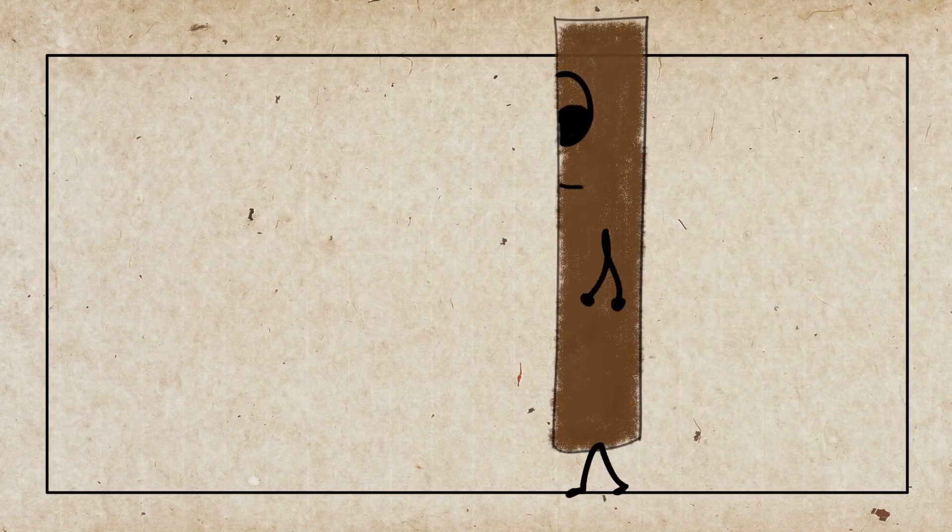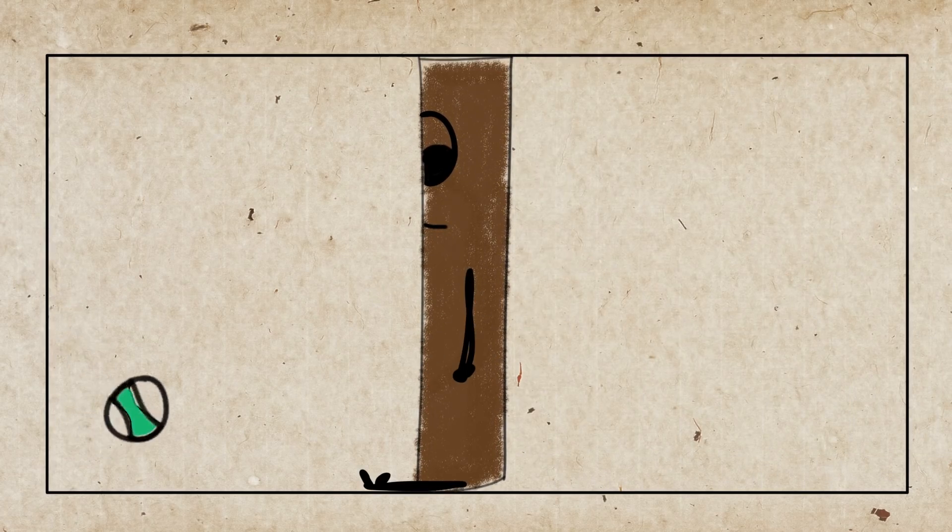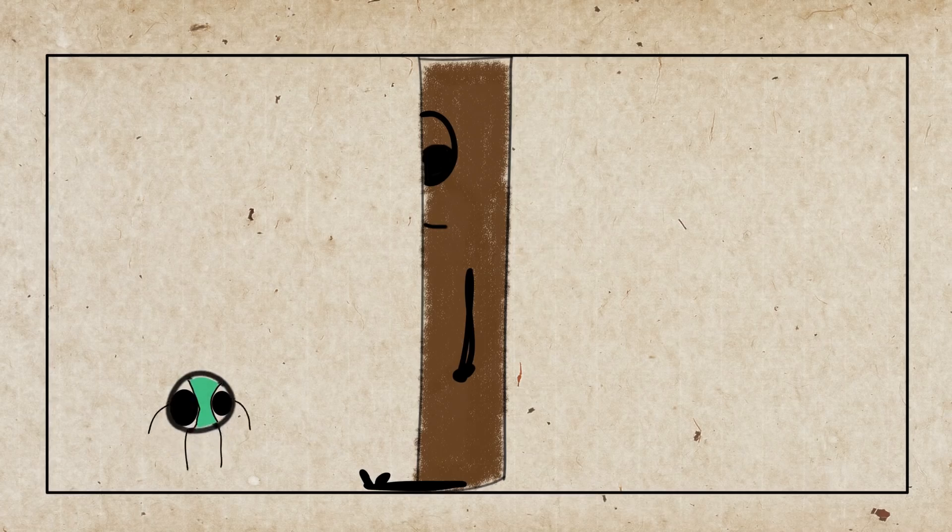Let's call it a barrier. For a classical object like this ball, it is impossible to cross through this barrier and appear on the other side, unless of course it has enough energy to break it.